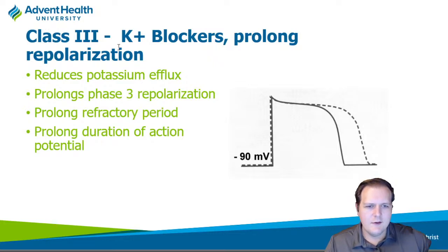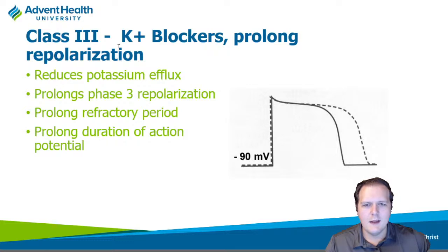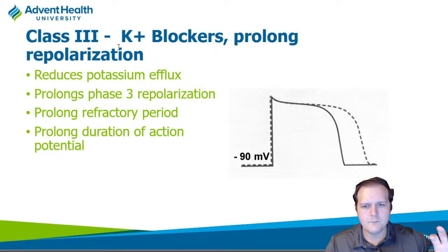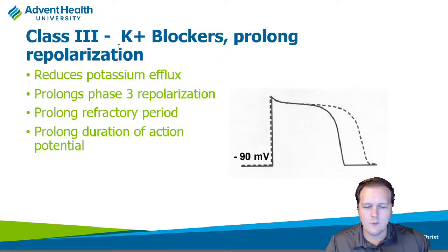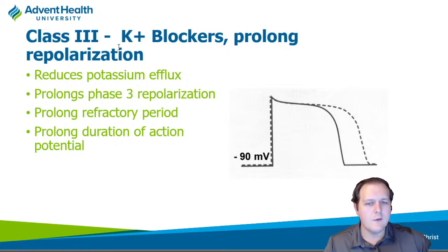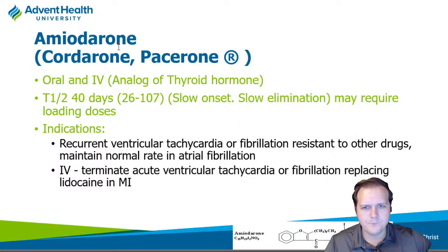Class 3 antiarrhythmics are newer drugs that have no effect on depolarization — they primarily affect repolarization. By blocking potassium channel efflux, they extend the refractory period and the time for cells to reset back to resting membrane potential. This disrupts re-entrant arrhythmias and helps reset the heart to normal sinus rhythm. Other drugs that prolong QTc — macrolides, fluoroquinolones — do essentially the same thing, which is why they cause QT prolongation.